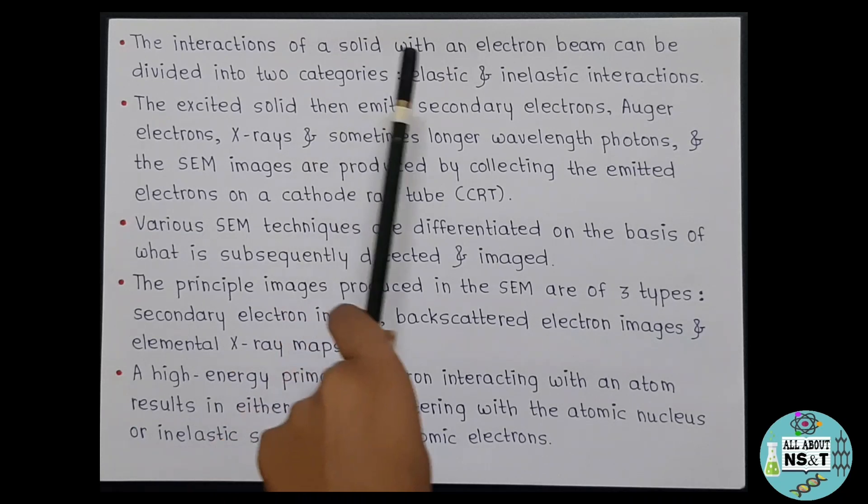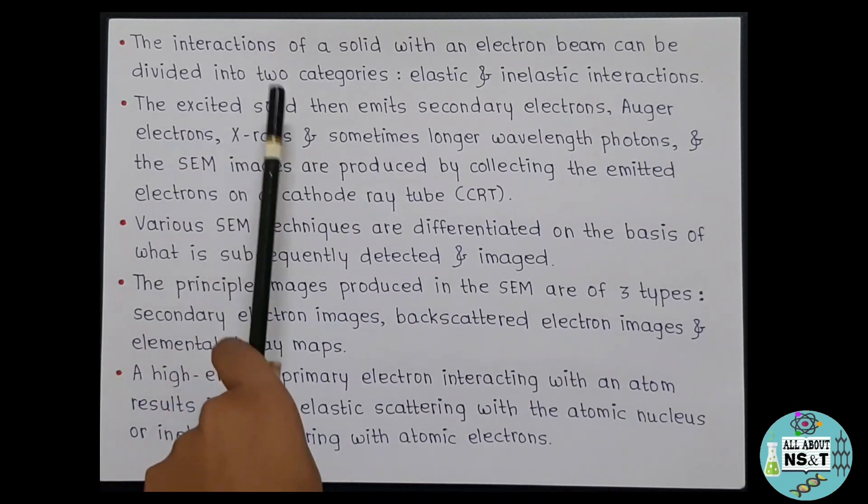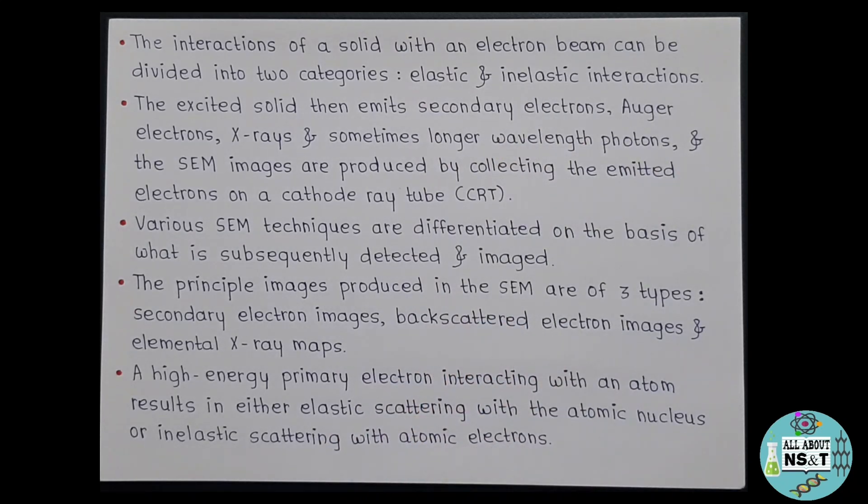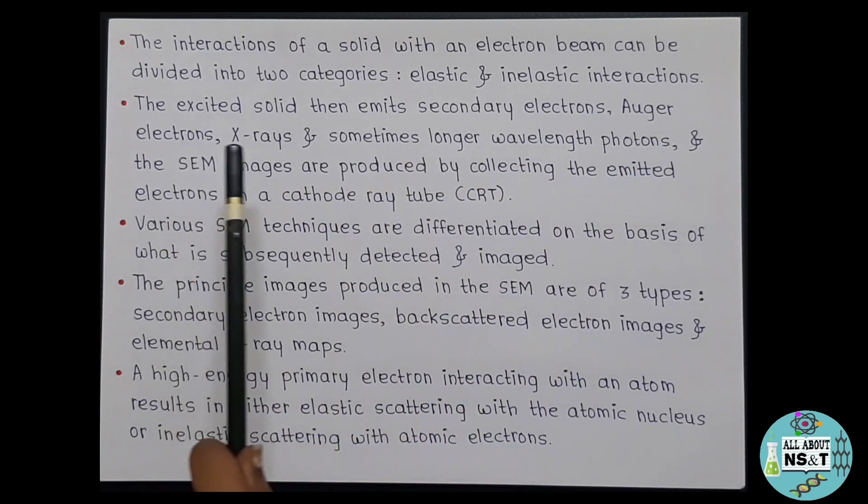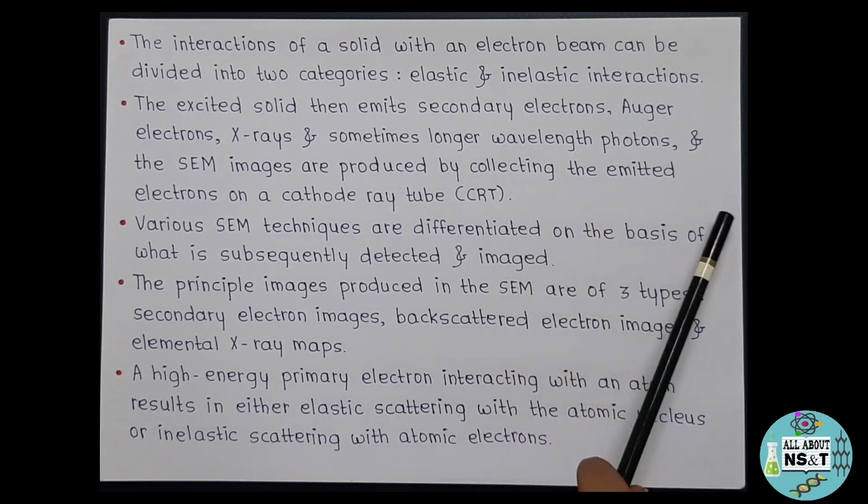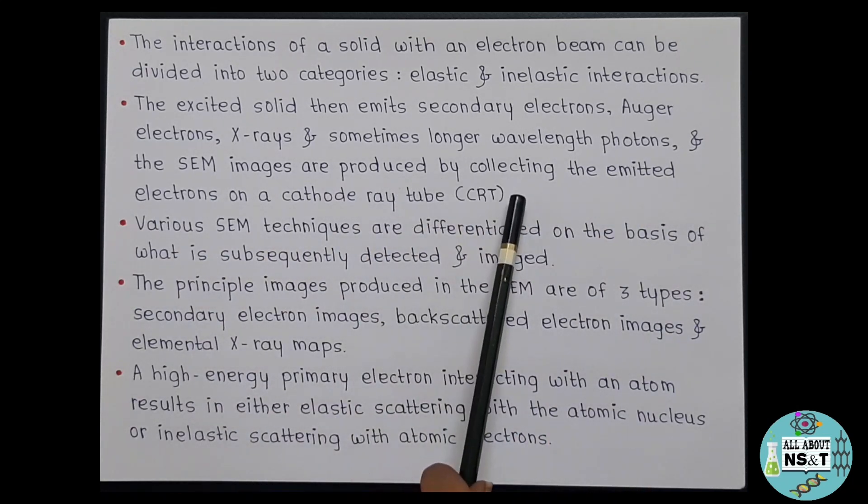The interactions of a solid with an electron beam can be divided into two categories, that is elastic and inelastic interactions. Now what are these elastic and inelastic interactions? So elastic interactions are those that affect the trajectories or path of electrons in the beam without changing their energy significantly, while inelastic interactions are those that transfer the energy of electrons to the solid. So after transferring the energy of electrons to solid, the solid sample gets excited. And then the excited solid emits secondary electrons, Auger electrons, x-rays, and sometimes longer wavelength photons. And the SEM images are produced by collecting the emitted electrons on a cathode ray tube, that is CRT.